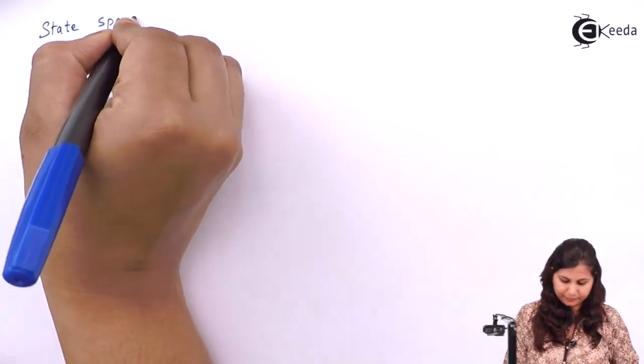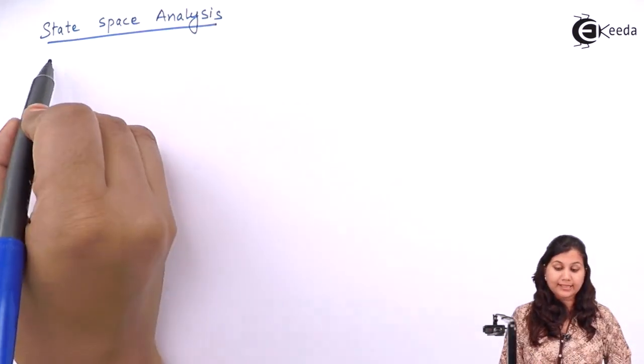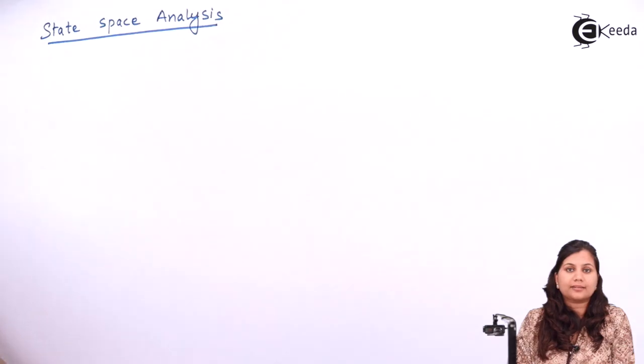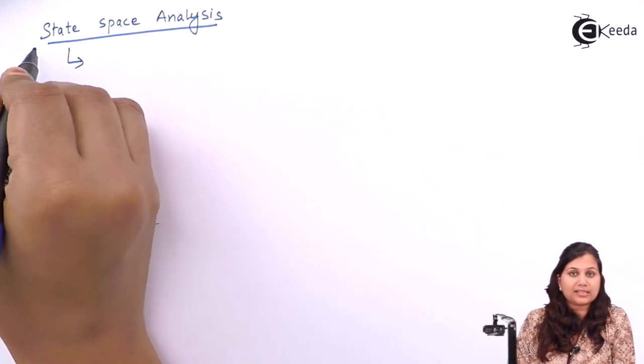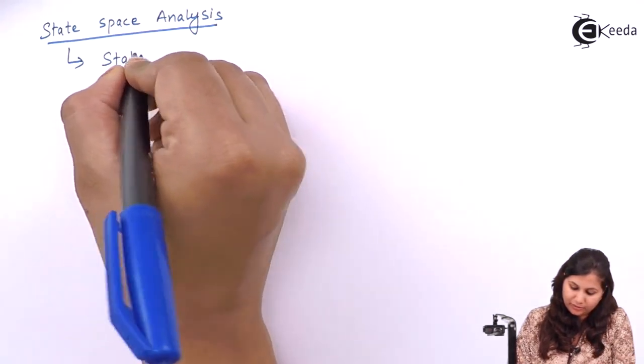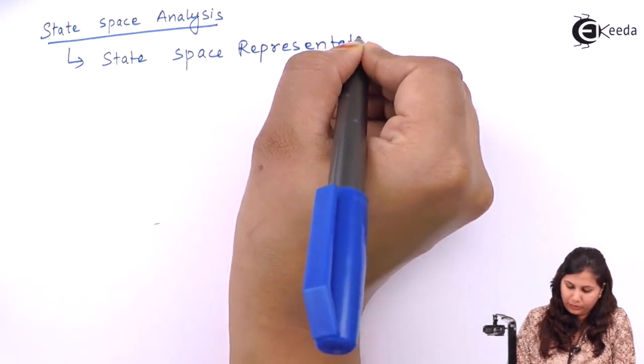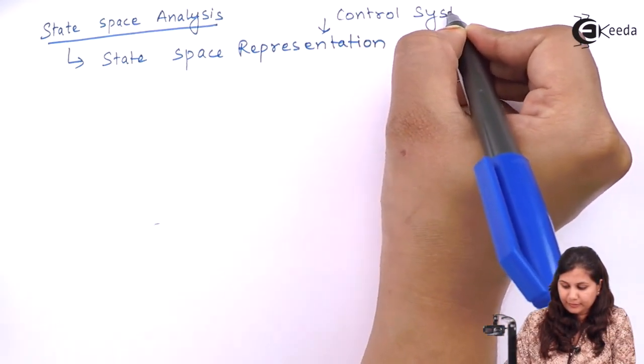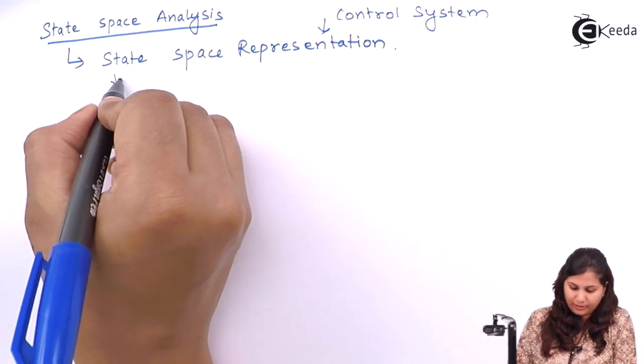Hello friends, in this video we are going to study the definitions of state, state variables, state space, and state vector. This is the basic terminology of the state space analysis. State space analysis is the modern approach of the analysis and design of control systems, and the representation of a system in state space analysis is known as the state space representation.